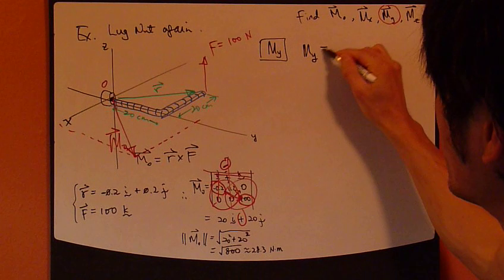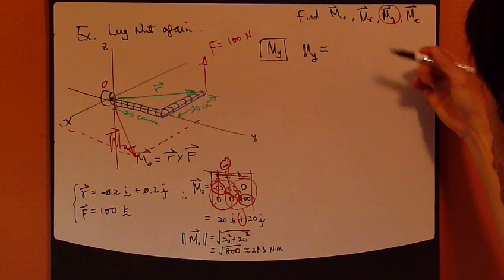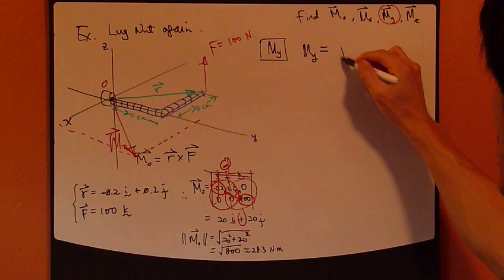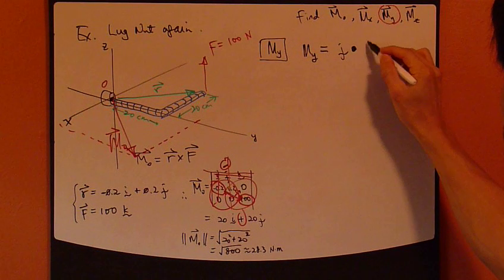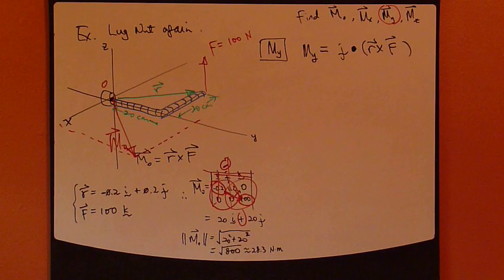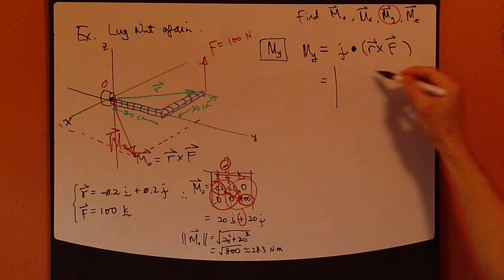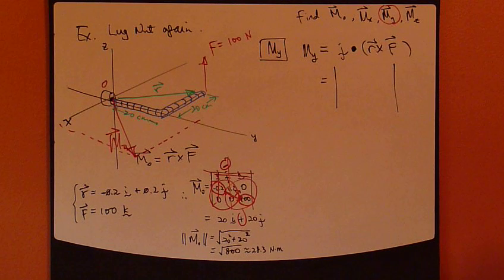Okay? For m_y. Alright? So, let's calculate m_y. So, m_y equals, I'm going to use the vector formulation. So, the mixed triple product. So, that's j vector dotted with r cross f. Okay? So, this can be calculated using determinant.